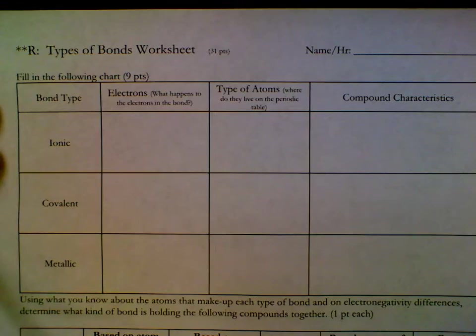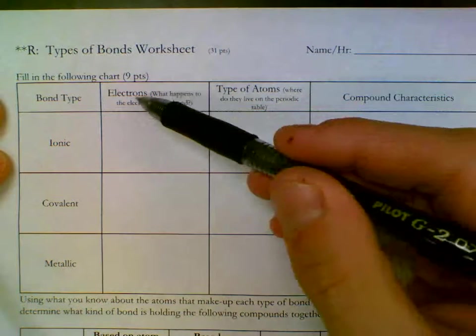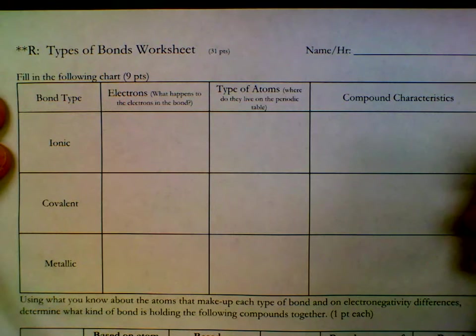This is the answer key for types of bonds worksheet. When we look at this worksheet, we need to know a few things. Bond type on the top part here, we need to look at what's happening to the electrons. And so we need to think of some small phrases.